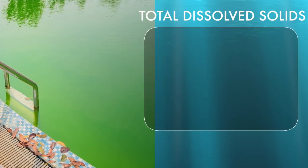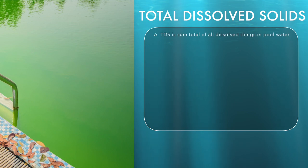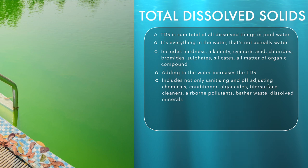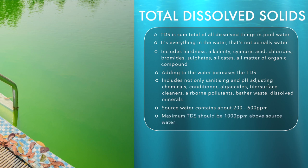Total Dissolved Solids, or TDS, is the sum total of all of the dissolved things in swimming pool water — it's everything in the water that's not actually water. It includes hardness, alkalinity, cyanuric acid, chlorides, bromides, sulphates, silicates and all manner of organic compounds. Every time you add anything to water you are increasing the TDS. This includes not only sanitising and pH adjusting chemicals, but also conditioner, algicides and tile surface cleaners. It includes airborne pollutants and bather waste, as well as dissolved minerals in the water. Source water contains about 200 to 600 parts per million, and the maximum TDS should be 1,000 parts per million above the source water level.